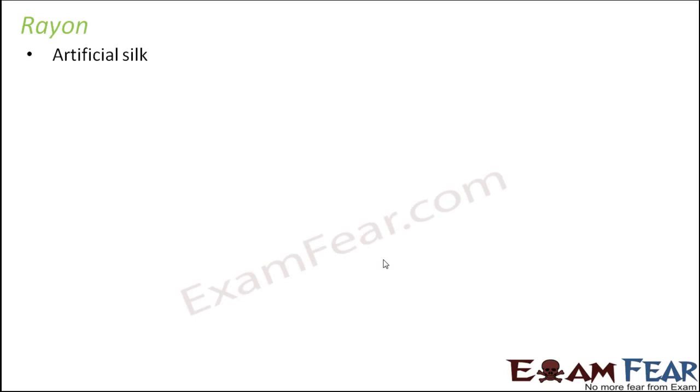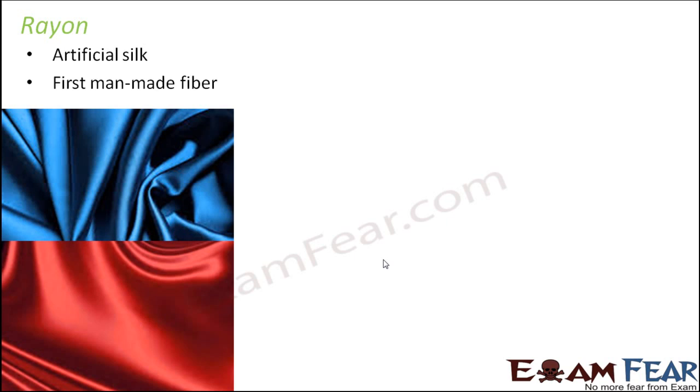Natural silk is obtained from silkworms, and the process of extraction of silk from silkworms is very costly, which makes natural silk very expensive. However, silk has a very beautiful texture and attractive appearance, creating high demand for different types of garments and clothing. That is why, somewhere in the 19th century, this artificial silk was developed for the first time.